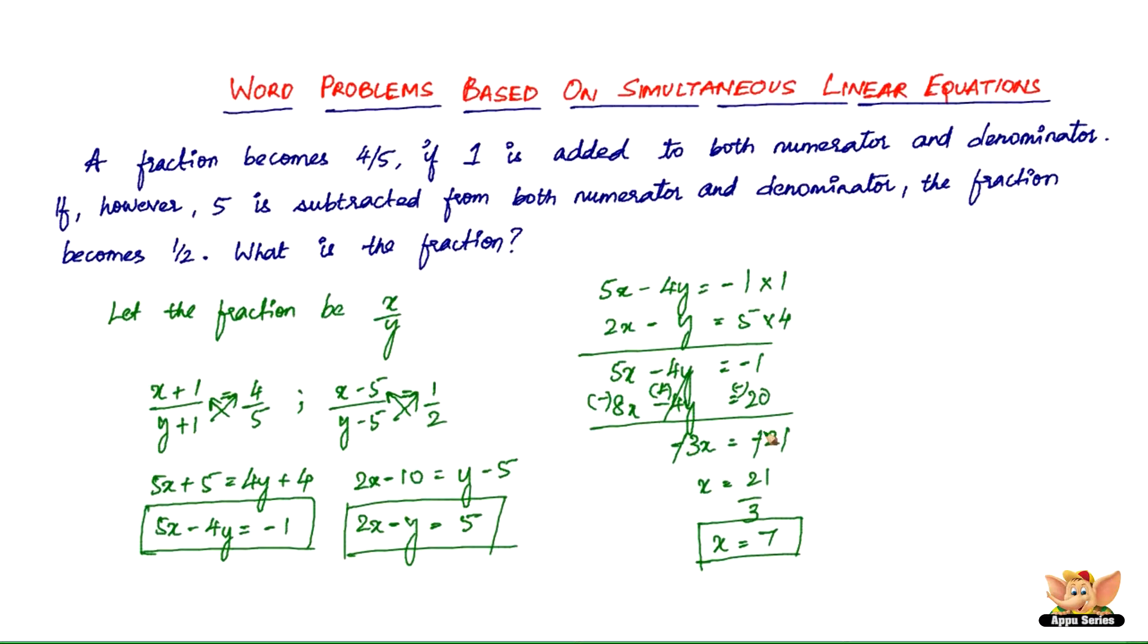So we found the numerator to be 7. So all that we have to do is find the denominator by substituting the value of x in any one of these equations. I'll take 2x minus y equals 5. 2 times 7 minus y equals 5. 14 minus y equals 5. y equals 14 minus 5. So 14 minus 5 is exactly 9. So y is 9. So since we found x and y, the fraction that we need is 7 by 9.